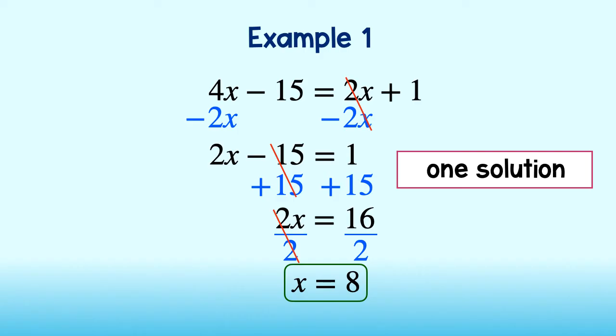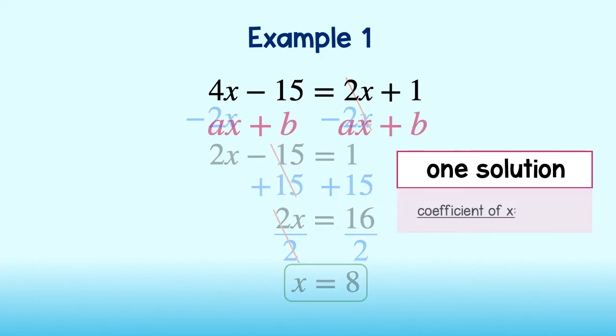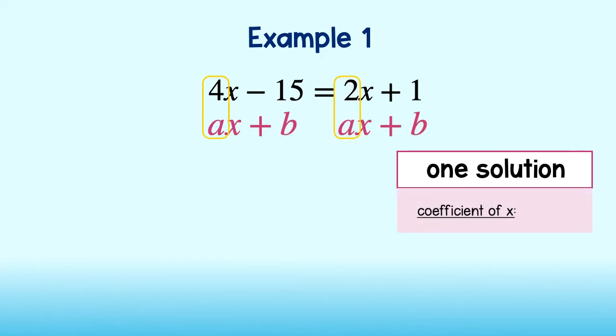Okay, now jump back to example 1. For an equation with one solution, we are only concerned with the coefficient. Unlike the other two outcomes, any equation with different coefficients will have only one solution, no matter whether the constants are the same or different.